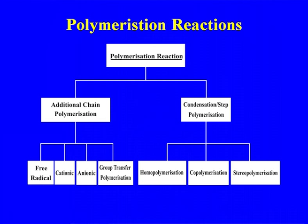We have two types of polymerization reactions: addition (chain) polymerization and condensation (step) polymerization. In condensation polymerization, there is always release of additional molecules — it may be water or methanol. Addition polymerization may be free radical, cationic, anionic, or group transfer polymerization. In condensation polymerization, it may be homopolymerization, copolymerization, or stereospecific polymerization. These are the different types of polymerization reactions taking place.